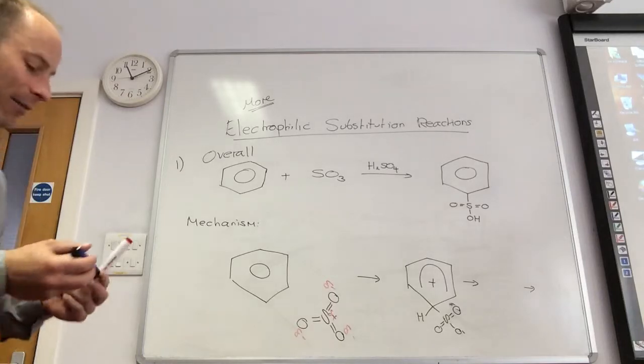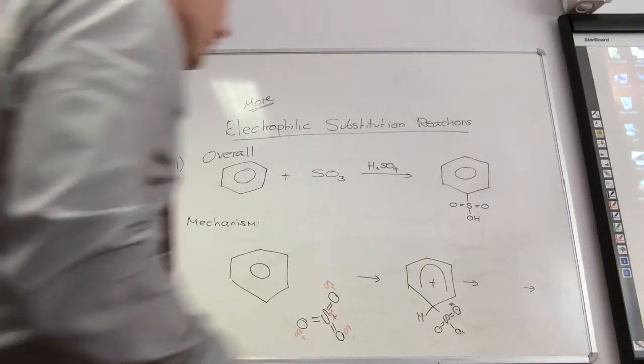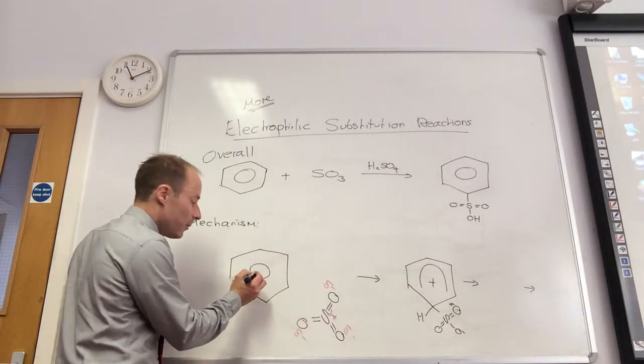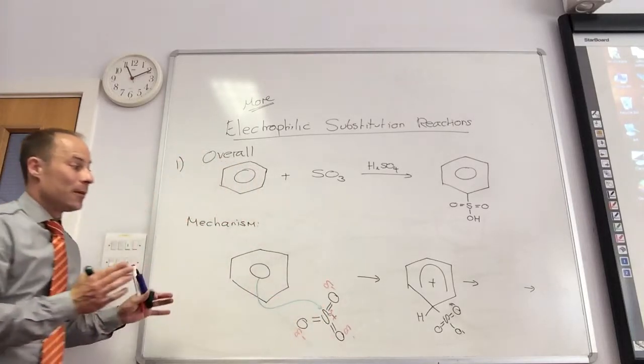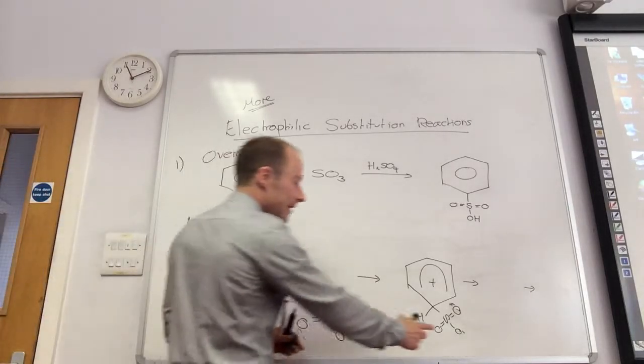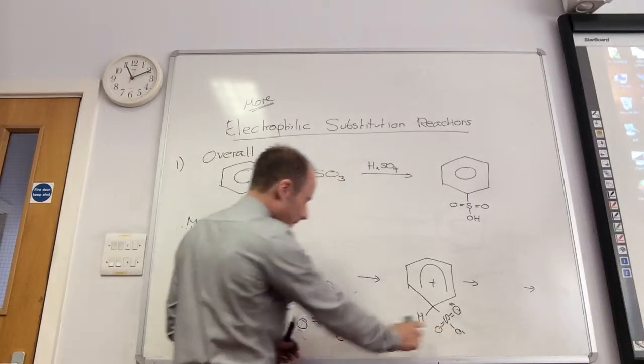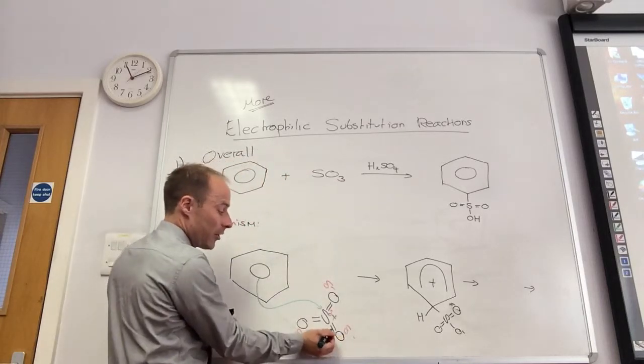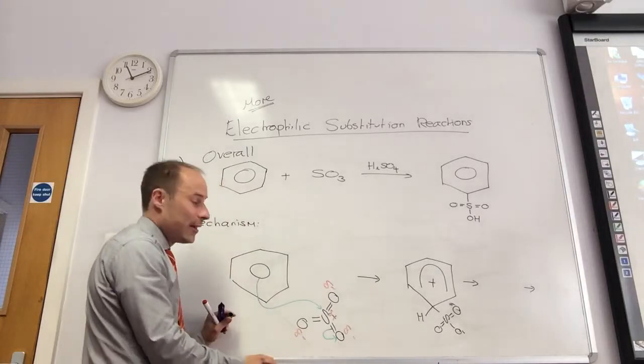And then you just pop your arrows in. The first thing that's going to happen is that your electrons are going to come out and go to my sulfur. But if you look at this next step here, what's happened to that double bond? It's broken. So that double bond has gone to that oxygen there.